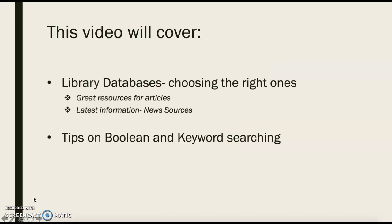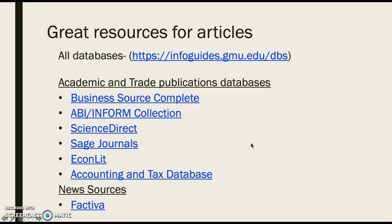This video will show you how to find the library databases and choose the right ones. We have great resources for articles, latest information, and news sources that can inform your research. And then we're going to have some fun with Boolean — search techniques that will get you the best results. Our library has great resources for finding articles, especially if you're working on a research paper and need academic literature, or if you're doing business research and need some trade publications. We really have everything in an easy to find, organized way.